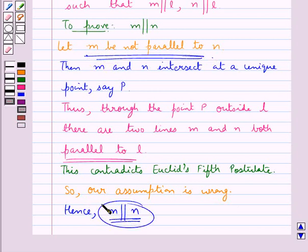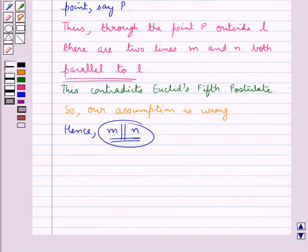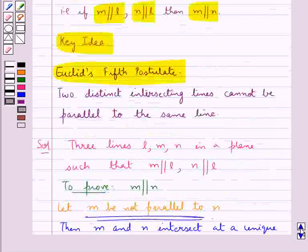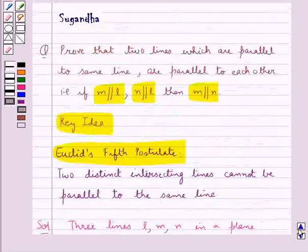we conclude that M is parallel to N. So we have proved that M is parallel to N. That is, we have proved that two lines which are parallel to same line are parallel to each other.